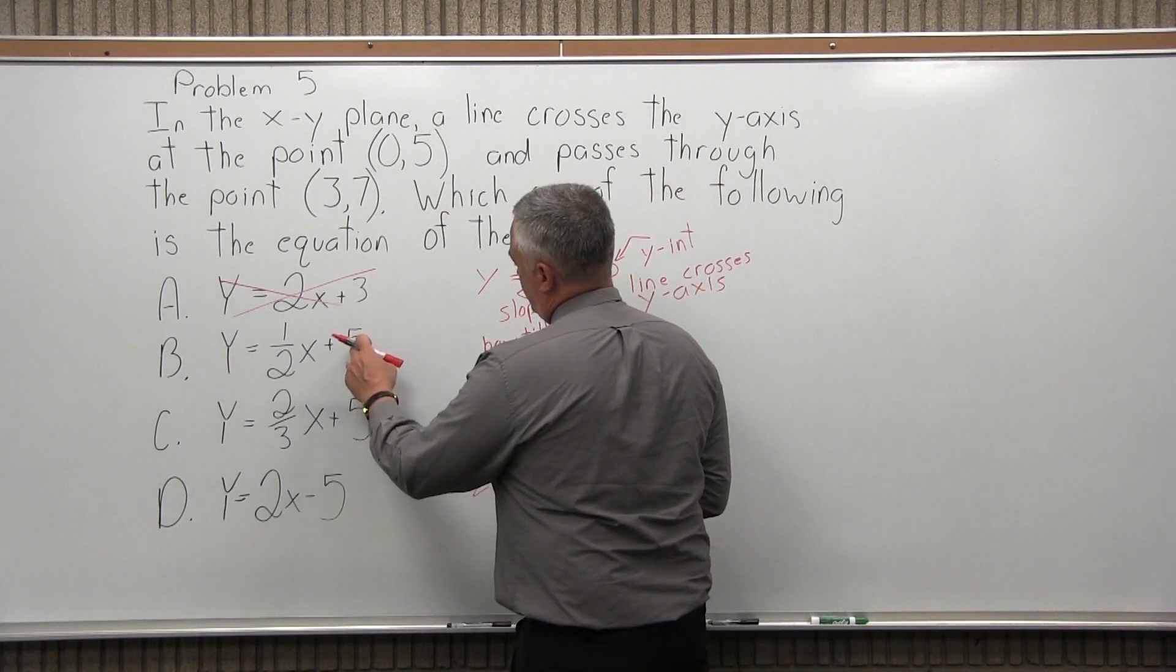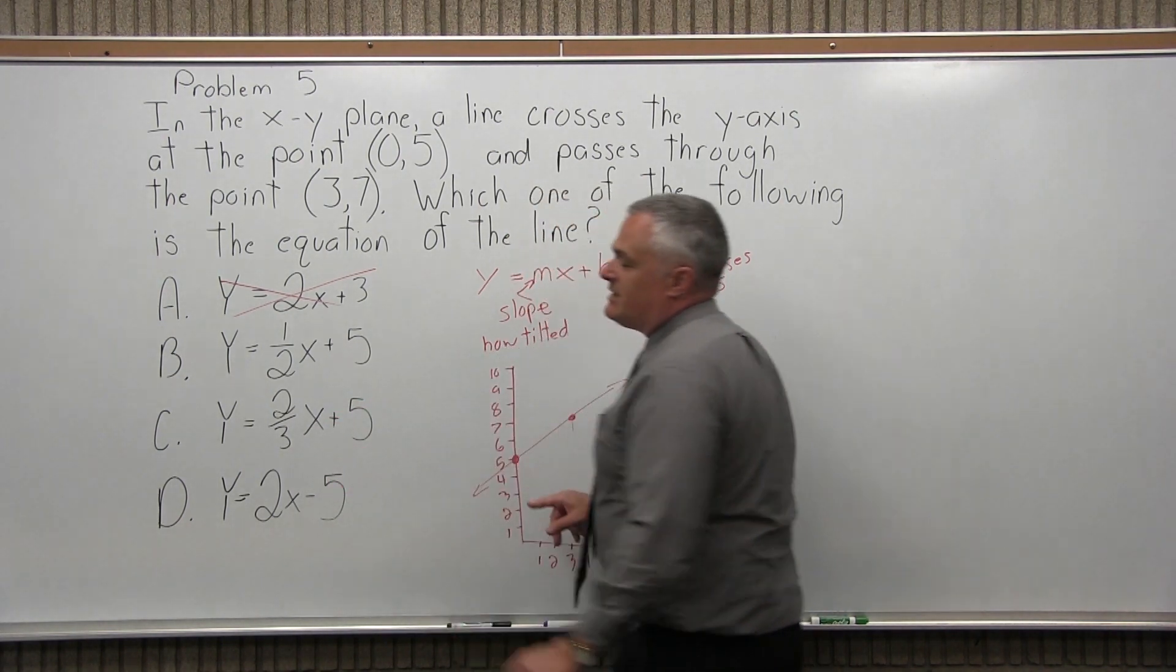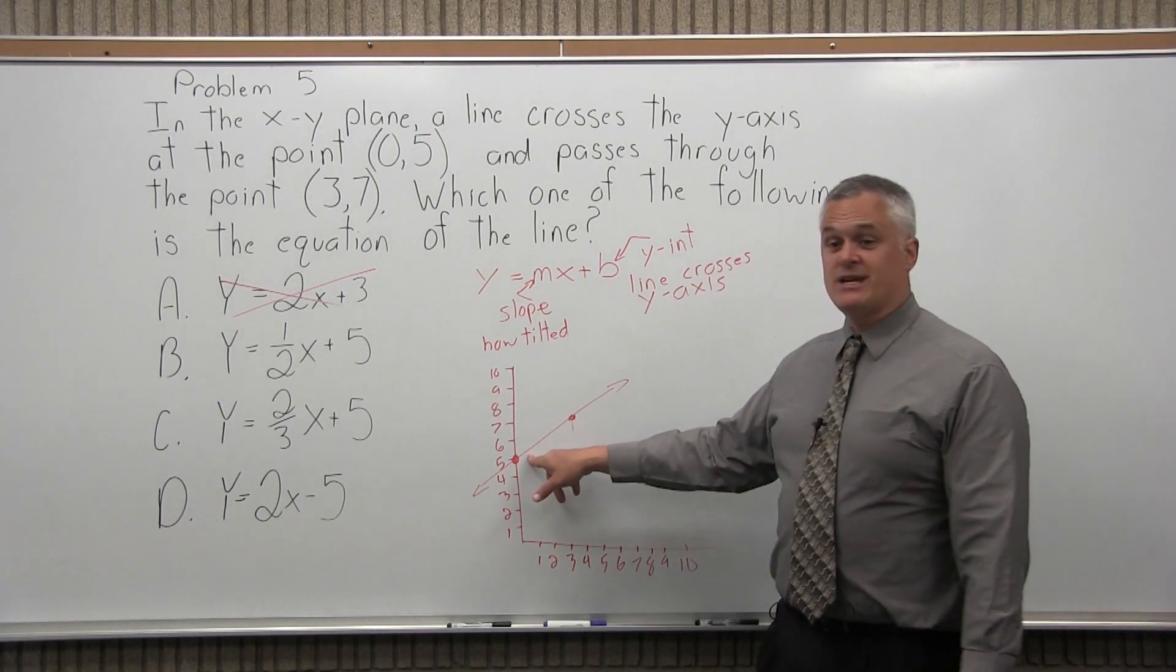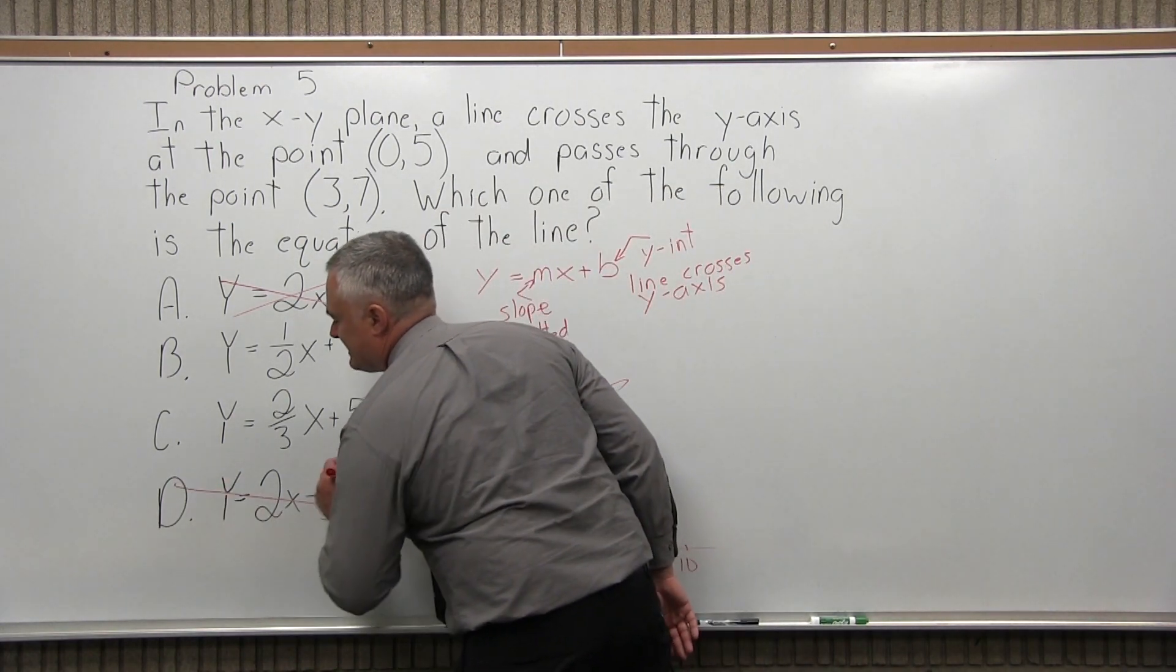Could be B, because it ends in a 5. Could be C, because that ends in a 5. Cannot be D. It says 5, but it's negative 5, which would mean that the line crosses down 5, which is not the case. It crosses at positive 5. So I can also eliminate D.